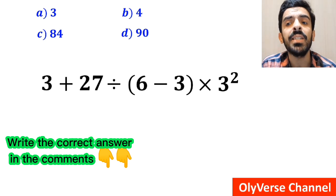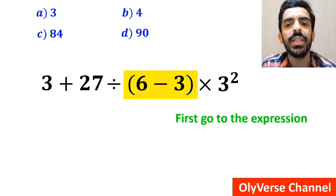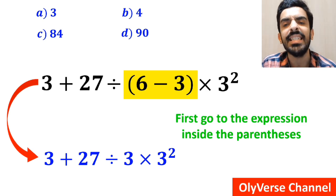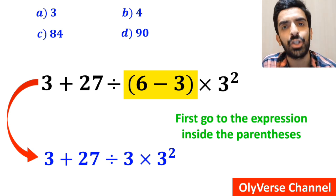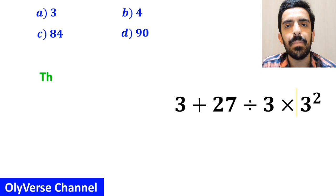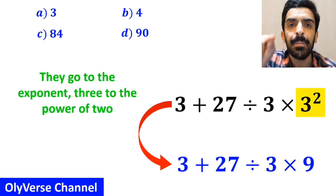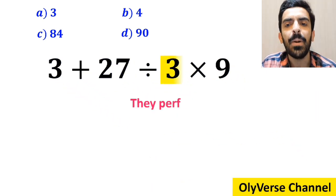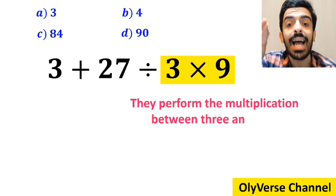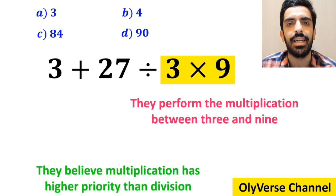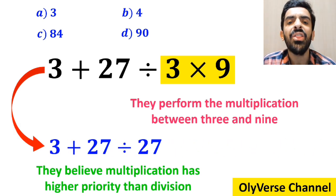Some other people, when solving this question, first go to the expression inside the parenthesis and instead write 3 plus 27 divided by 3 times 3 to the power of 2. In the next step, they go to the exponent 3 to the power of 2 and simplify the expression to 3 plus 27 divided by 3 times 9. Then they perform the multiplication between 3 and 9, because they believe multiplication has higher priority than division, writing 3 plus 27 divided by 27.